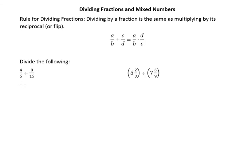So we have 4 fifths divided by 8 fifteenths. Now remember the rule is we're going to leave that first fraction alone, and understand that dividing by a fraction is the same as multiplying by its reciprocal or flip. So we leave the 4 fifths alone, but we're going to multiply by the flip of 8 fifteenths, which is 15 eighths.